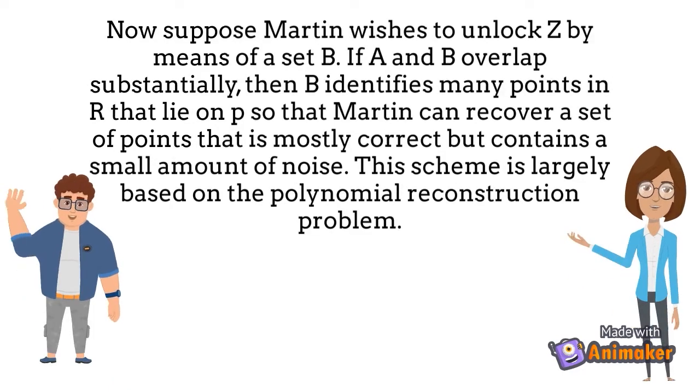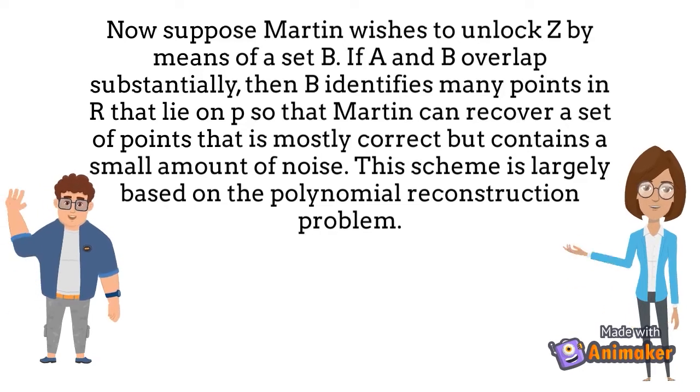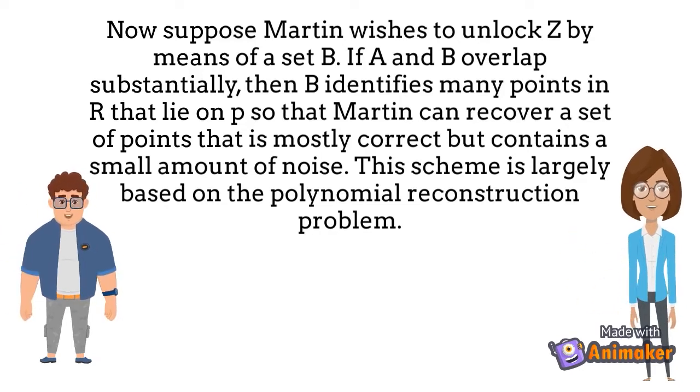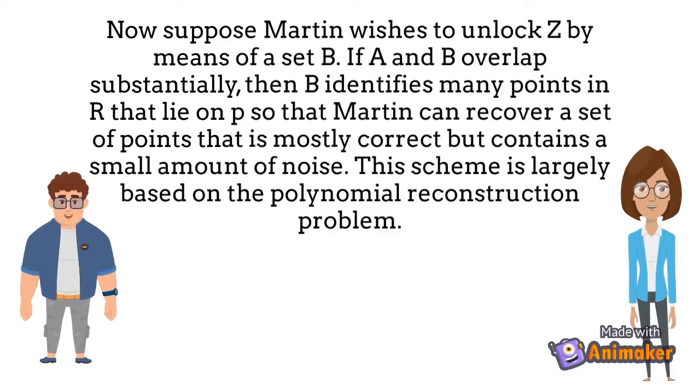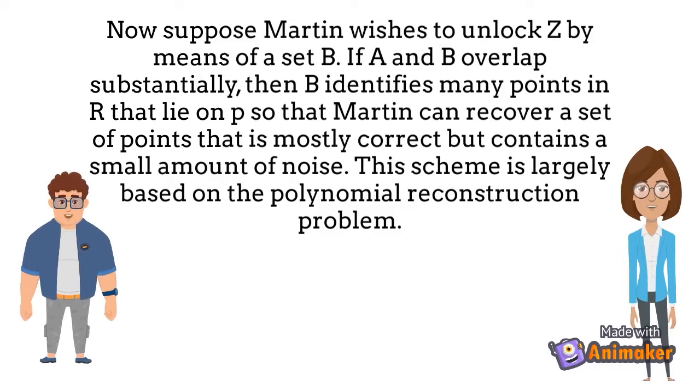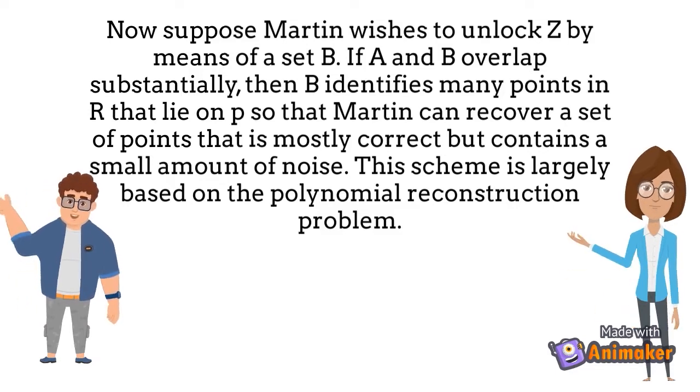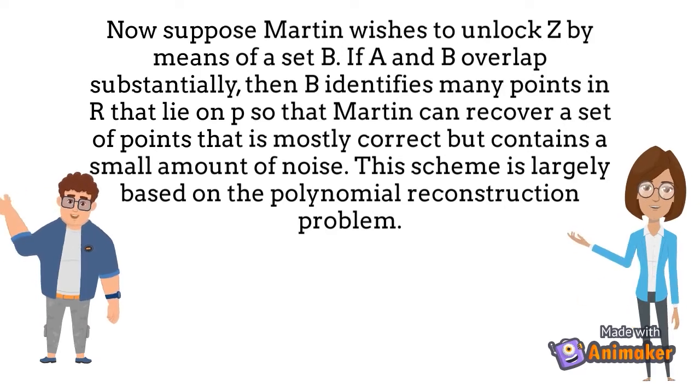Now suppose Martin wishes to unlock Z by means of a set B. If A and B overlap substantially, then B identifies many points in R that lie on P so that Martin can recover a set of points that is mostly correct but contains a small amount of noise. This scheme is largely based on the polynomial reconstruction problem.